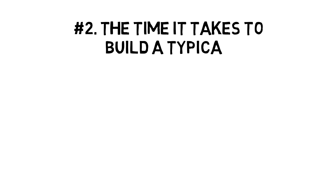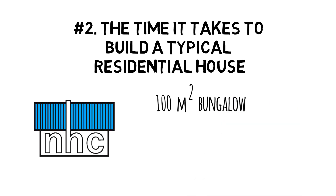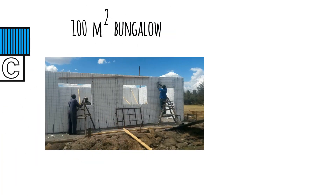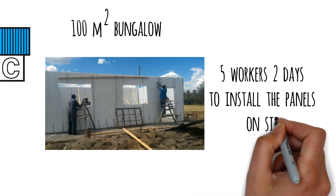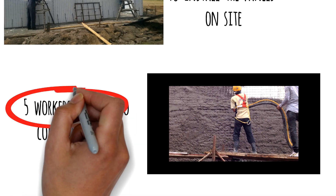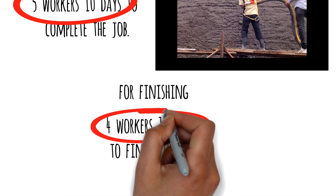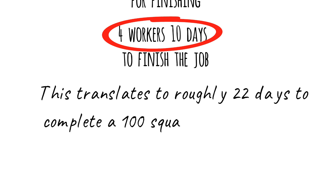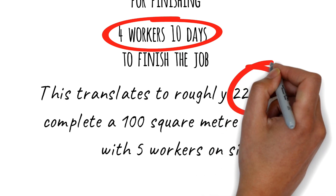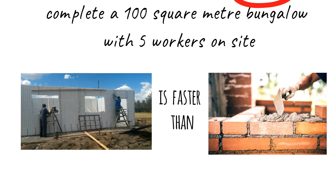The second parameter is the time it takes to build a typical residential house. According to the National Housing Corporation, or NHC, to build a 100 square meter bungalow: erecting the panels takes five workers two days; shotcrete plastering of the walls and pouring concrete on the roof takes five workers ten days; and finishing takes four workers ten days. This translates to roughly 22 days to complete, which means EPS technology is faster than traditional brick and mortar — it significantly saves on time.